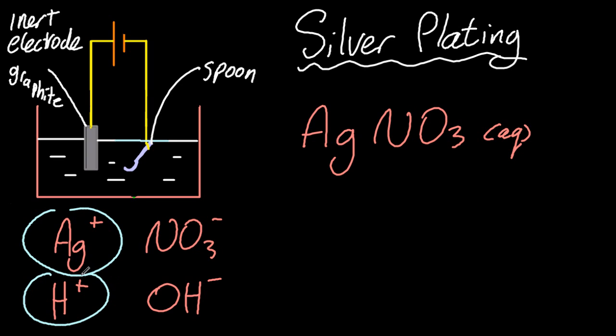Now, looking at the positive ions, which is lower on the standard electrode potential list, that will be preferentially discharged. So the silver's going to be coated onto the spoon.